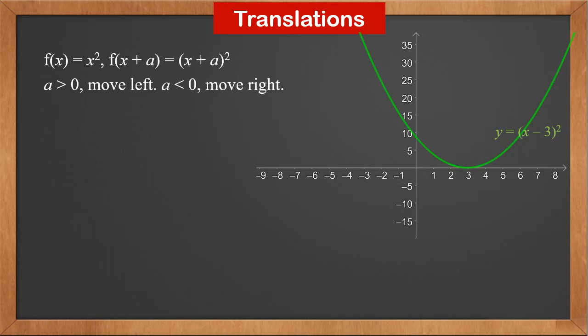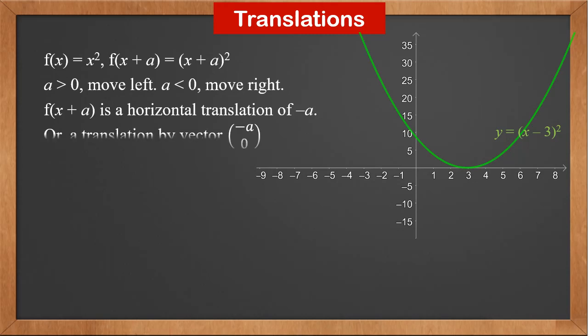This kind of transformation is called translation. If f(x) = x², then (x+a)² is f(x+a). Therefore, f(x+a) is a horizontal translation of −a, or a translation by vector (−a, 0).